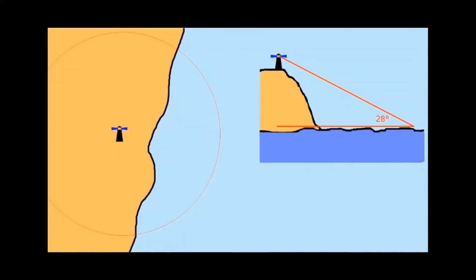Here we have a lighthouse sitting on a hill, and we determine that the angle of that lighthouse from the horizon — or from the shoreline — is 28 degrees. Using calculations or a lookup table, we can get a line of positions, known as a position line, which is this arc around here.